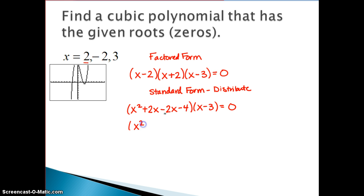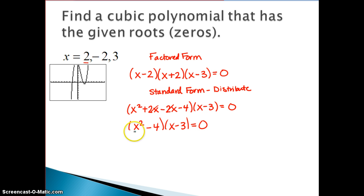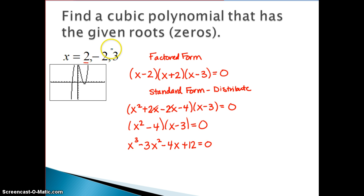I'm going to combine like terms. Those two are opposites, so they cancel, and I'm left with a factored form that still needs one more distribution. So x squared times x gives x cubed, x squared times negative 3 gives negative 3x squared, negative 4 times x gives negative 4x, and negative 4 times negative 3 gives positive 12. When it asks to find a cubic polynomial with the given roots or zeros, this standard form is the answer.